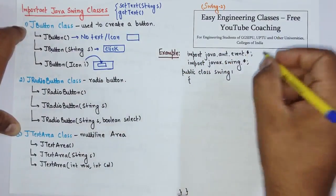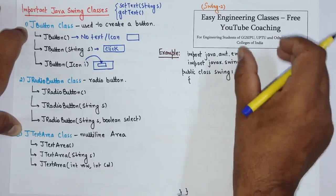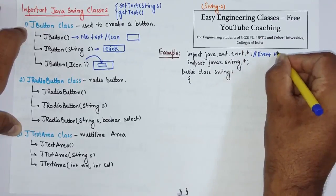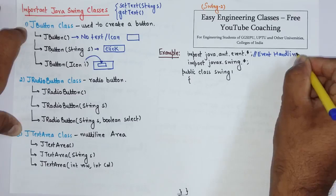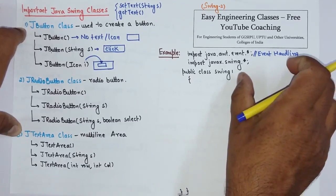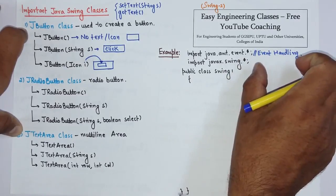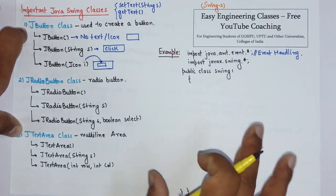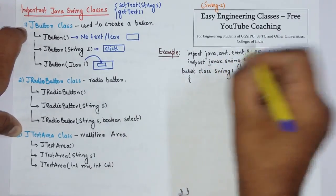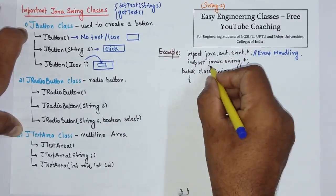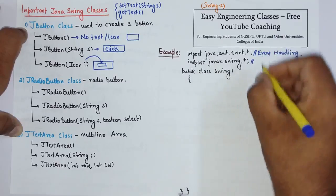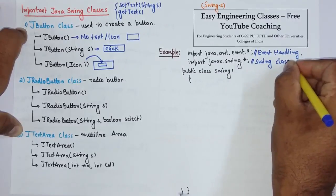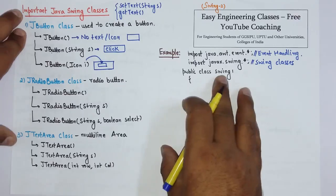Now see how you can create a simple Java Swing application. You have to import two packages. This package is for event handling, event handling is exactly same as the AWT event handling, so I'm not going to cover event handling here. I have already posted videos of event handling in AWT you can refer those. Now to use Swing classes you have to import javax.swing package.